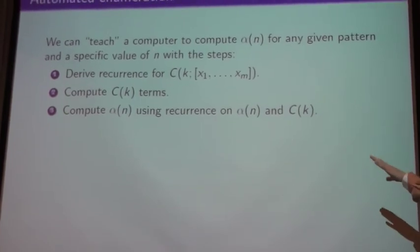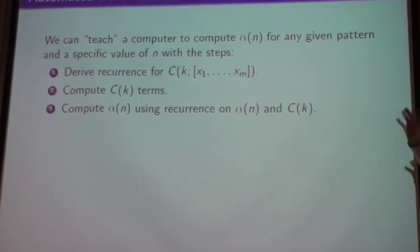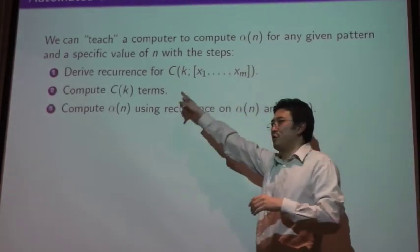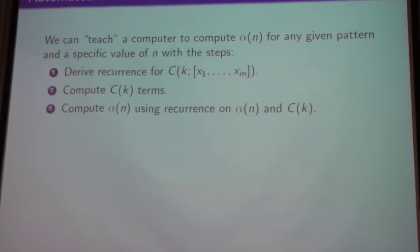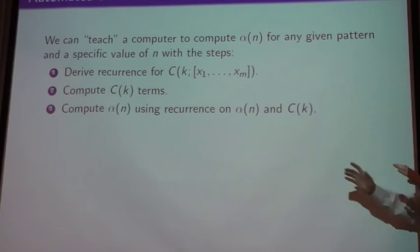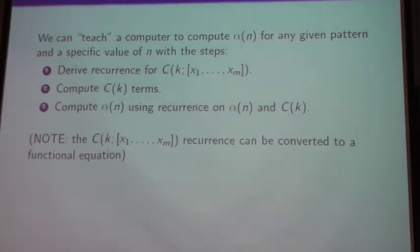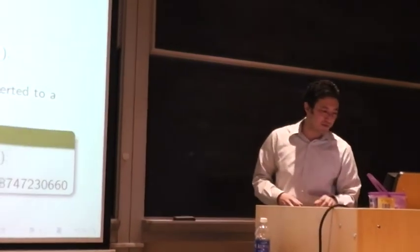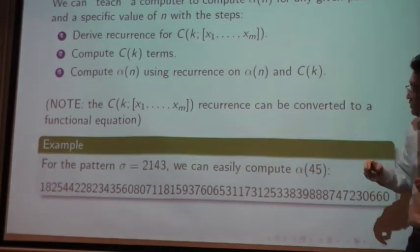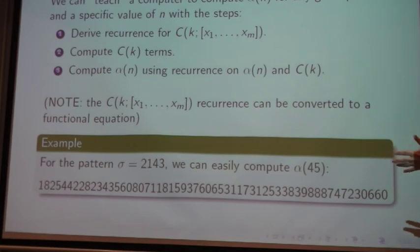So, in this portion of my thesis work, basically the goal was to teach a computer to, given any pattern sigma, to automatically derive a recurrence for this sort of refined expression. Using that, compute the C_k terms and then computing the relevant sequence, the terms alpha n. And so, one thing to mention is that this approach is guaranteed to work for any pattern in this consecutive case. Now, for classical patterns, there's no approach that's guaranteed to work for everything. But for the consecutive case, this approach works for any pattern. And one more thing is that these recurrences can be converted to sort of ugly functional equations to also speed up the computation. So, just as an example, if the pattern is 2, 1, 4, 3, you can easily compute the 45th term of the sequence, which is this thing here. It's actually not that far off from 45 factorial.